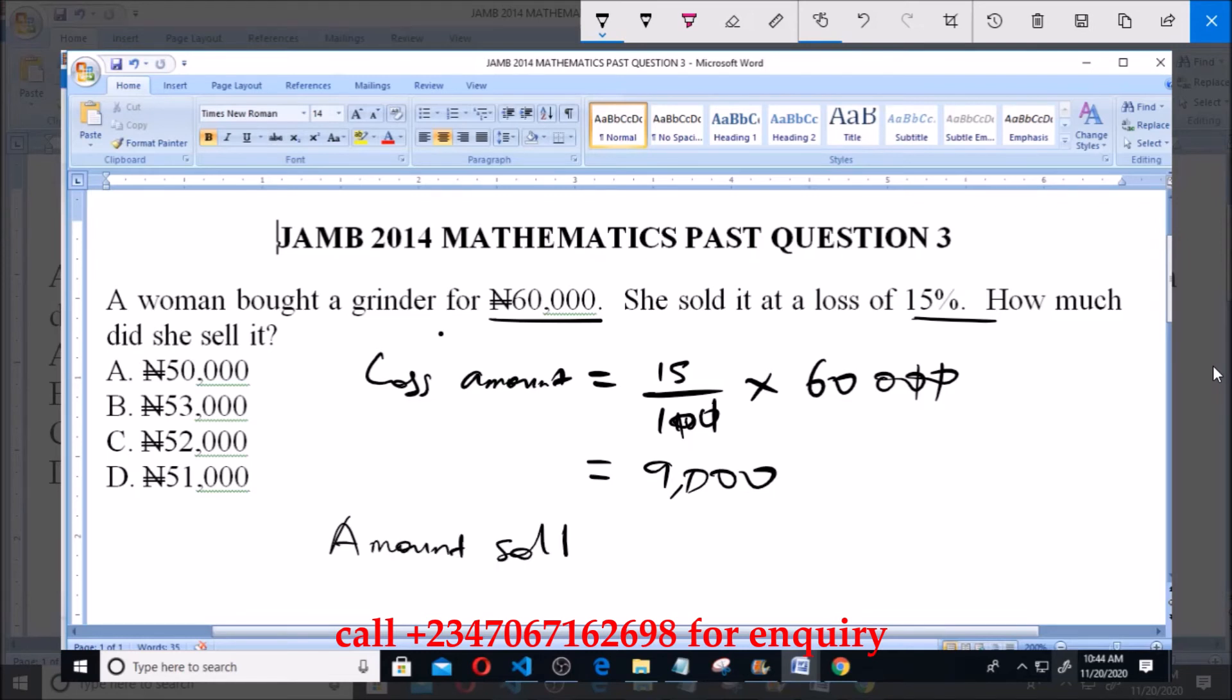Now the amount at which she sold it will be equal to 60,000 naira, which is the amount at which she bought it, minus the loss amount which is 9,000 naira. That will give us 51,000 naira.